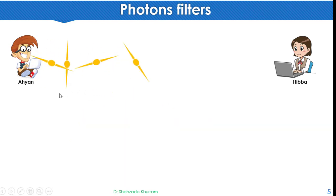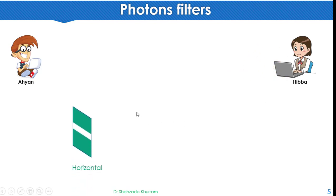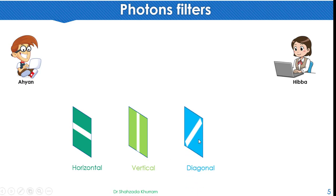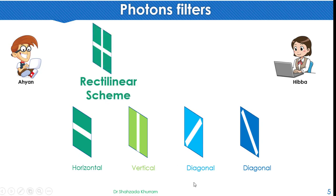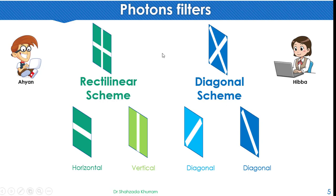The photon in its state is sent to the receiver. We have four filters used for communication: one horizontal filter, one vertical filter, and two diagonal filters. Using these filters, the photon state is read. We group them into two schemes: the rectilinear scheme, which includes horizontal and vertical, and the diagonal scheme. These filters are used for communication.